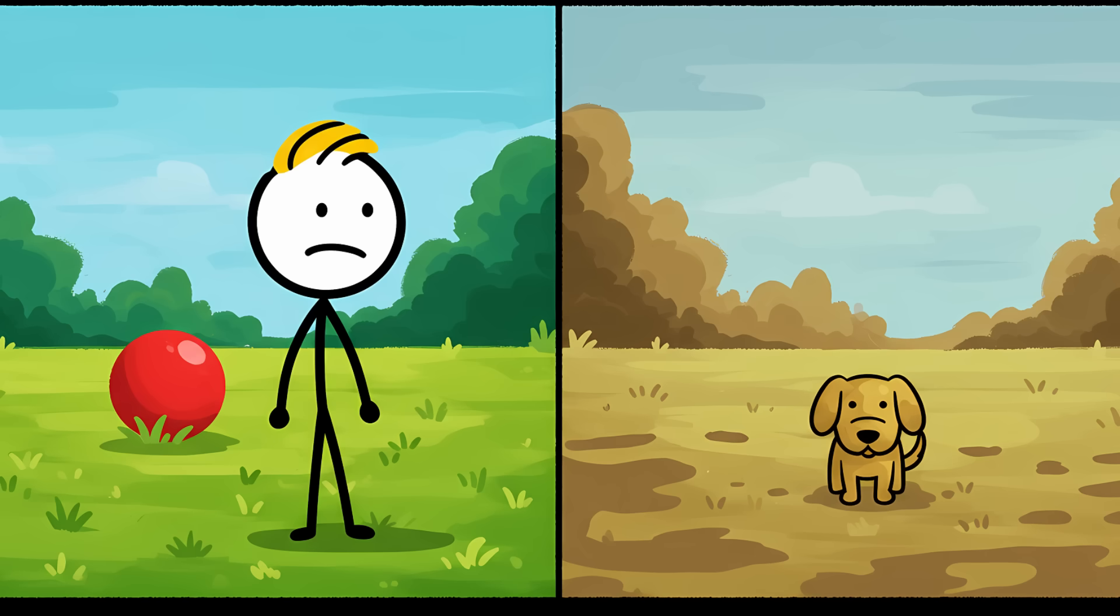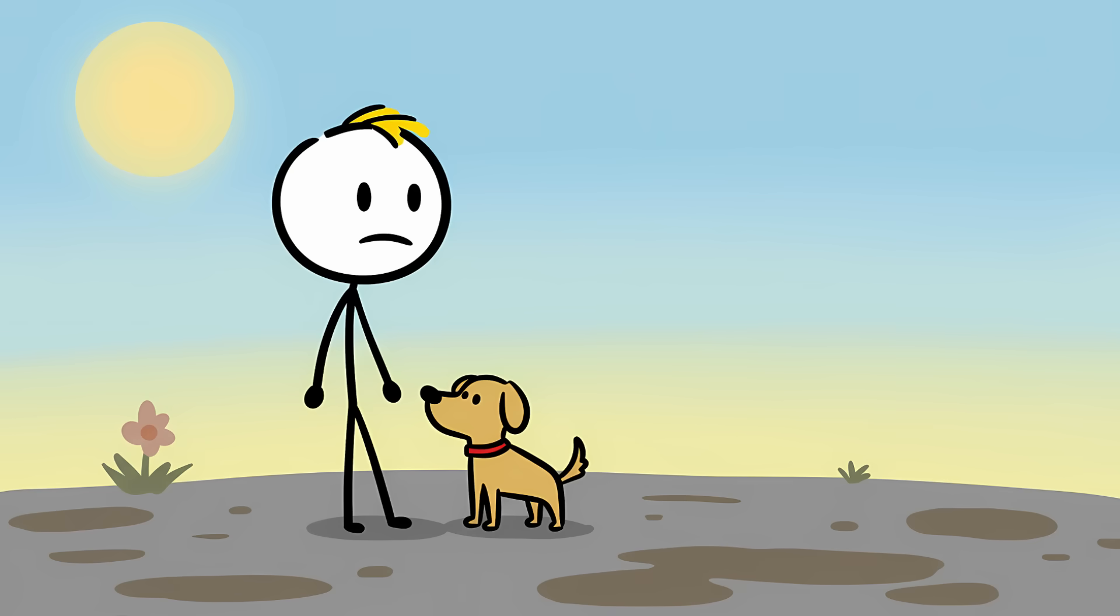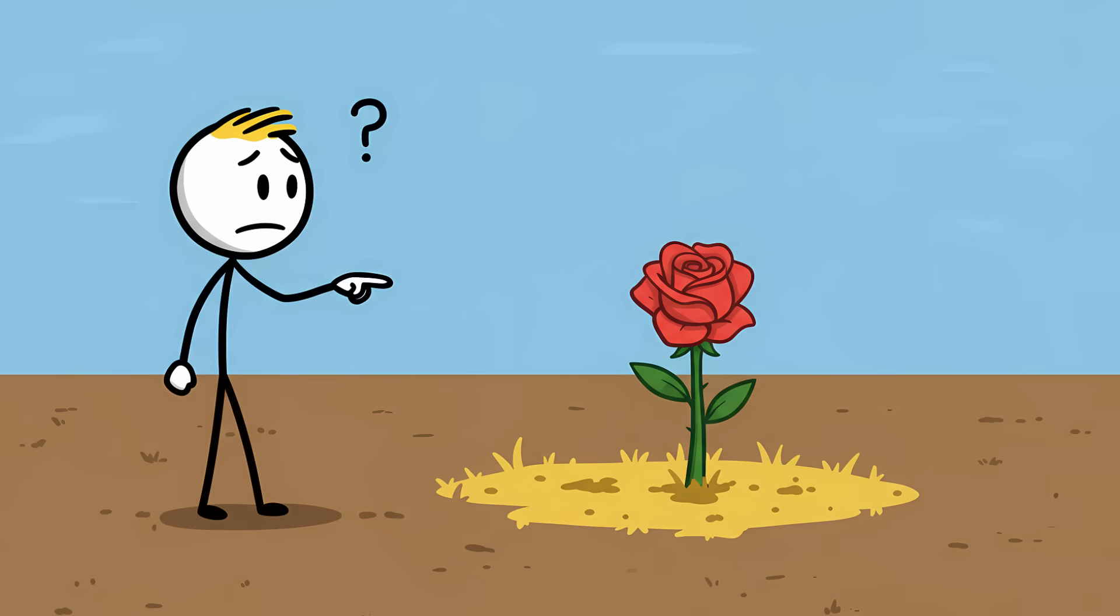Dogs, on the other hand, are dichromats. They only have two types of cones, which are sensitive to blue and yellow. This means their world is mostly a mix of blues, yellows, and the grayish-browns that result from mixing those. What they can't distinguish well are reds and greens.